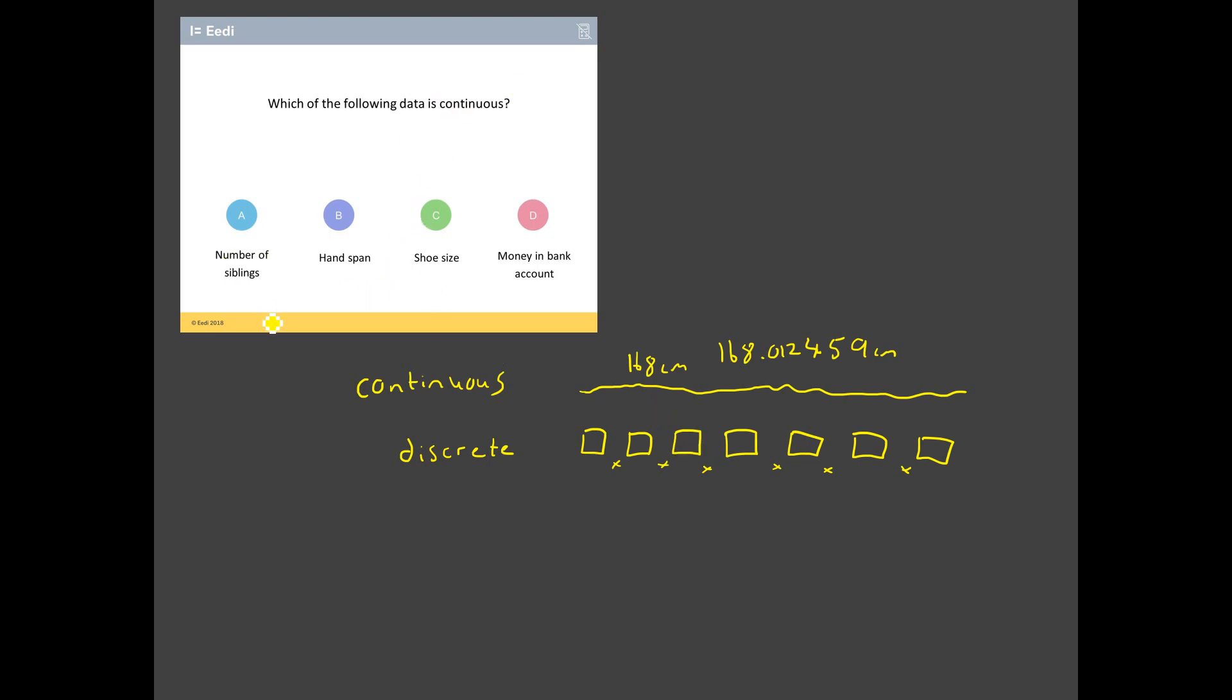So this question is saying, which of the following data is continuous? Well, let's go through these. Number of siblings, well I've just said, no, that's set. It's predefined, so it can't be that one. Hand span, well that's a measurement. How wide is your hand? Well, your hand could be something really nice, like an integer value, 30 centimeters. But it could equally, and it's probably a lot more likely to be, something along these lines, some really crazy decimal number, because it could be anything in between. So that is definitely continuous. So that's looking likely, but let's just check. Shoe size, well I've just said that could be size 2, 2.5, 3 and so on. It's predefined.